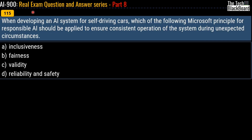Question 115 is the last question of our entire AI-900 real exam question and answer series. When developing an AI system for self-driving cars, which Microsoft principle for responsible AI should be applied to ensure consistent operation during unexpected circumstances? Options are: inclusiveness, fairness, validity, or reliability and safety. The correct answer is option D — reliability and safety. That covers all 115 questions spanning the length and breadth of the AI-900 certification exam.